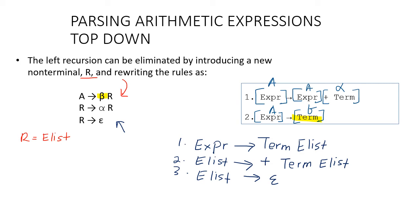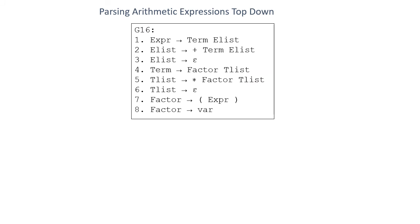Grammar 5 displays this property at rules 1 and 2, and rules 3 and 4. Grammar 6 is grammar 5 that has been rewritten. It no longer shows the property of left recursion, and two new non-terminals have been introduced — ELIST and TLIST — because rules 1 and 2 and rules 3 and 4 previously showed the property of left recursion. Now we can check whether grammar 6 is an LL1 grammar by going through the 12 steps.